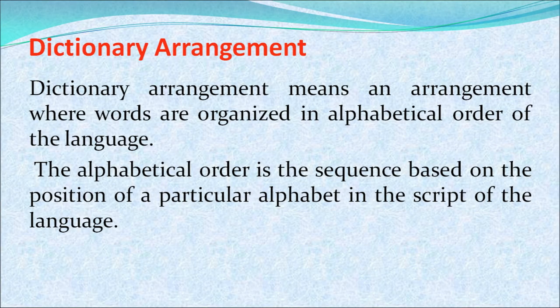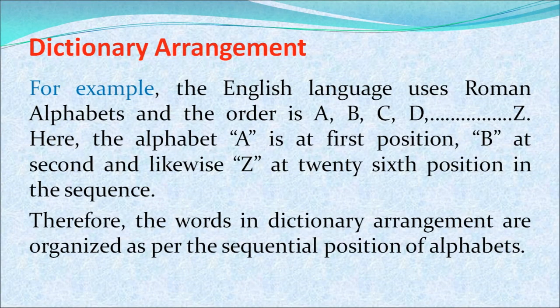Dictionary arrangement means an arrangement where words are organized in alphabetical order. Alphabetical order is the sequence based on the position of a particular alphabet in the script of the language. For example, English uses Roman alphabets in the order A, B, C, D to Z, where A is in the first position and Z is in the 26th position. Therefore, the words in the dictionary arrangement are organized as per the sequential position of the alphabets.